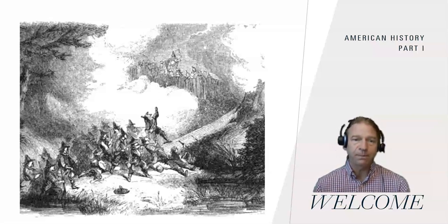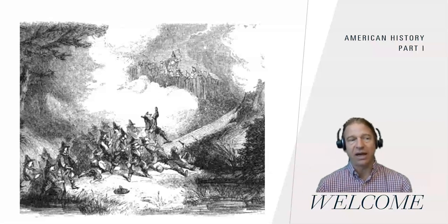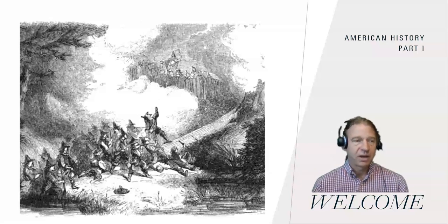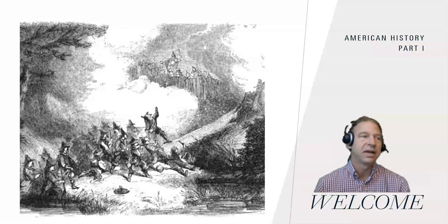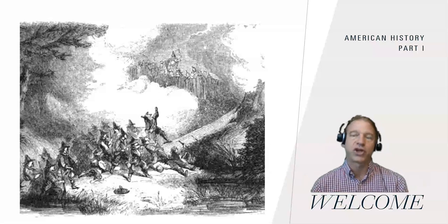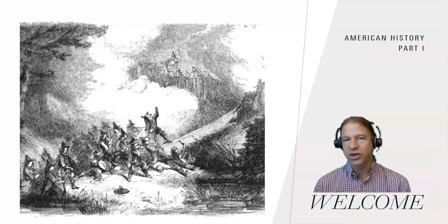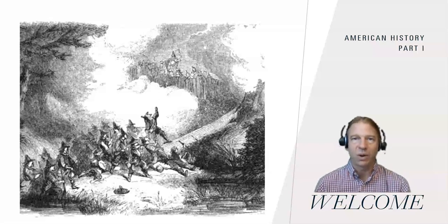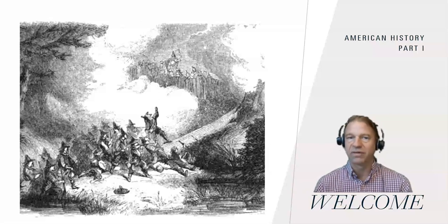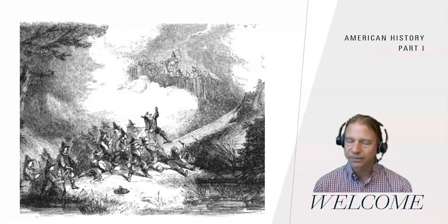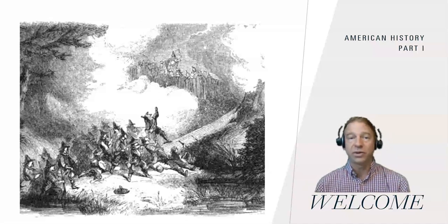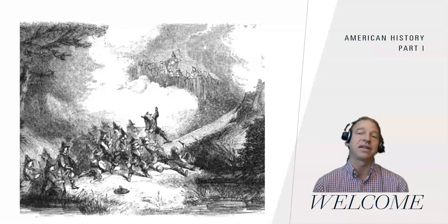So this is American History Part 1. We'll be analyzing and examining American history from the arrival of Europeans following Columbus and the Conquistadors up until the end of the American Civil War and the Reconstruction period. We're going to look at the North American colonies, how the colonies expanded, how colonial life changed over time. We will look at the developments of the institution of slavery in the North American colonies and how slavery shaped the development of racism and inequality in the United States. We'll look at the origins of the American Revolution and how it led to a new experiment in representative society.